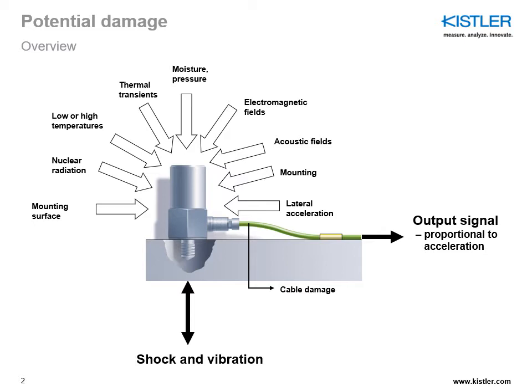Third, if the hermetic sealing of the sensor case is lost, moisture may penetrate the sensor, which increases the conductivity of the crystal or ceramic and affects the frequency response in the low range. Any moisture adhering to the case can also have an effect on the ground isolation of the case, potentially causing a ground loop.